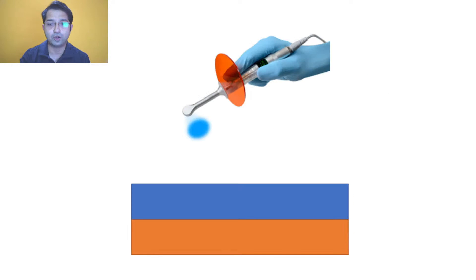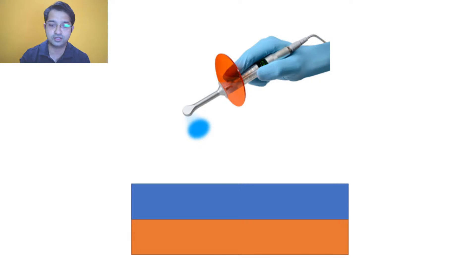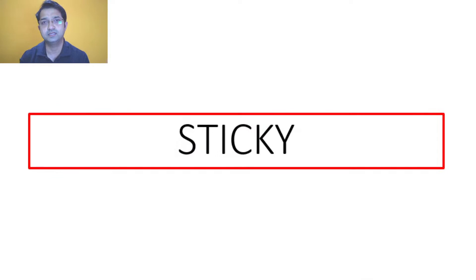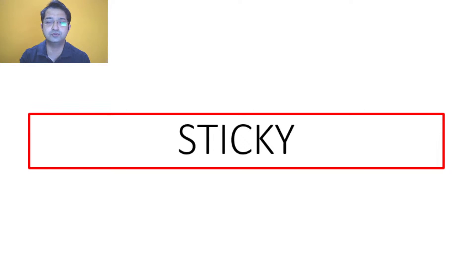The oxygen inhibited layer has its problems, but without it, you cannot bond composite to already-cured bonding agent, and you cannot perform the incremental bonding technique — so it is essential for composite bonding. However, it is not always beneficial. The last layer of composite remaining after you've built up the restoration completely will still be inhibited by air, and this is a problem because that layer is sticky.